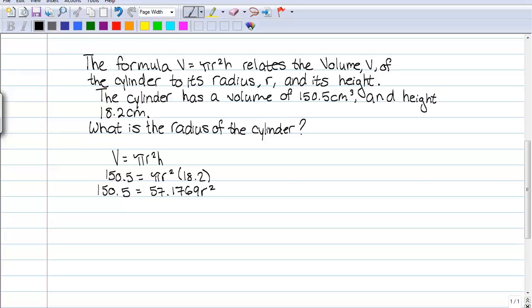And now to isolate the r squared we need to divide both sides by 57.1769. And so we get 2.632 equals r squared.